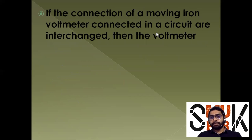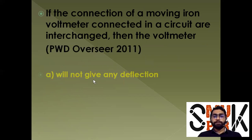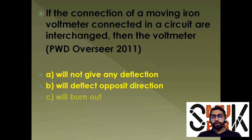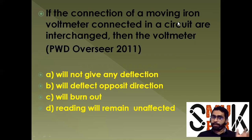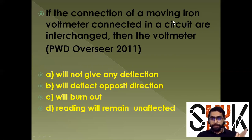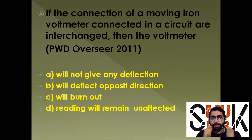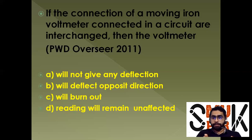If the connection of a moving iron voltmeter connected in a circuit is interchanged, what happens? The answer is: the reading will remain unaffected. Because a moving iron system works on both AC and DC — when you reverse the connection, the iron piece still moves in the same direction. So the reading remains unchanged. Option D is the correct answer.